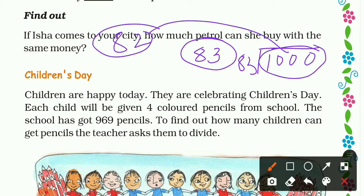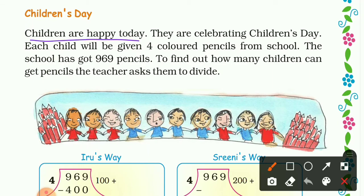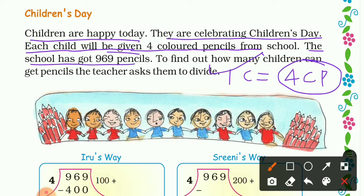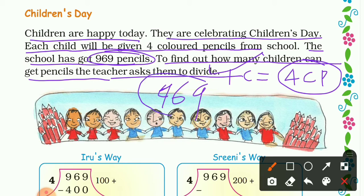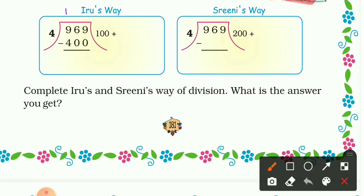Now the next topic: Children's Day. Children are happy today — they are celebrating Children's Day! If you know the date, comment it. Each child will be given four colored pencils. The school has got 969 pencils in total. To find how many children can get pencils, the teacher asks them to divide 969 by 4. Let's see the students' solutions — here is Iru's way and here is Srinis' way.